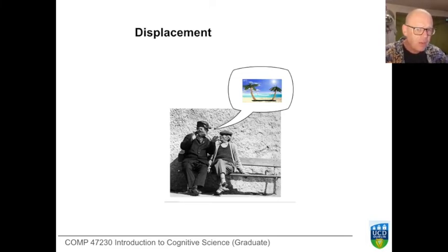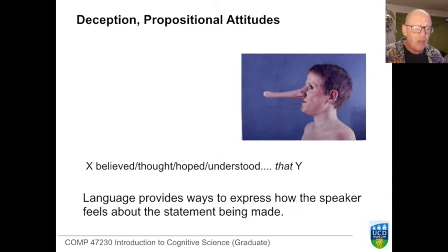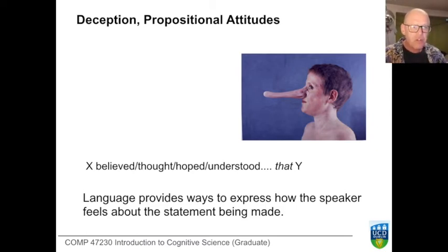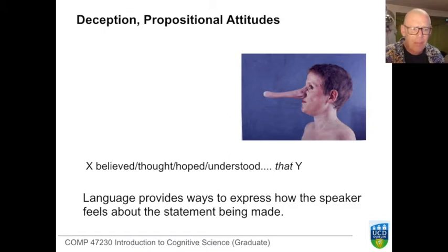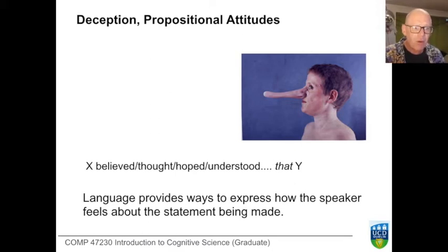Another thing that human language does that might be unique is that as well as saying something about the world, we can also communicate how we stand in relation to that state of affairs. So as well as saying 'the cat sat on the mat,' we can say 'Joe believes that he thought that the cat had sat on the mat.' We can qualify what we're saying with things like believing, thinking, hoping, understanding — signaling not only facts about the world but how we stand in relation to those facts.